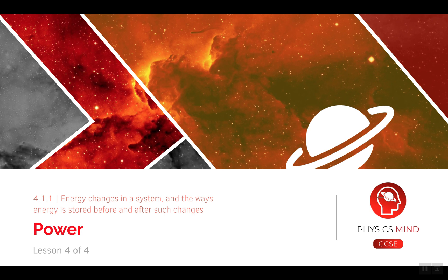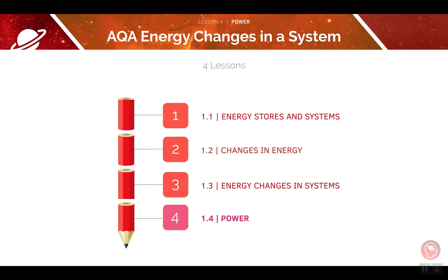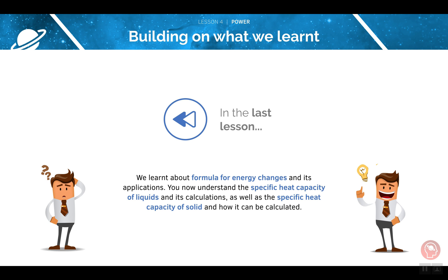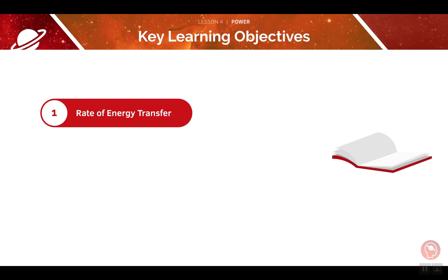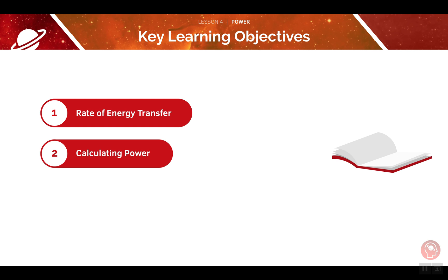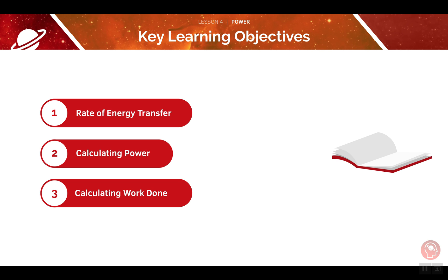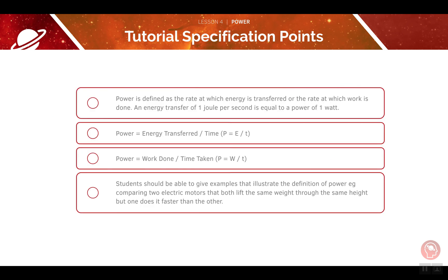Welcome to lesson four of four in this tutorial covering power. This is the final video in our series of four lessons on the topic of energy changes in a system. In the last lesson we learnt about energy changes and focused on specific heat capacity with calculations. Here are our key learning objectives for this session: rate of energy transfer, calculating power, and calculating work done. Here is the list of AQA specification points we'll be covering — pause the video now to have a quick read through them before we begin.